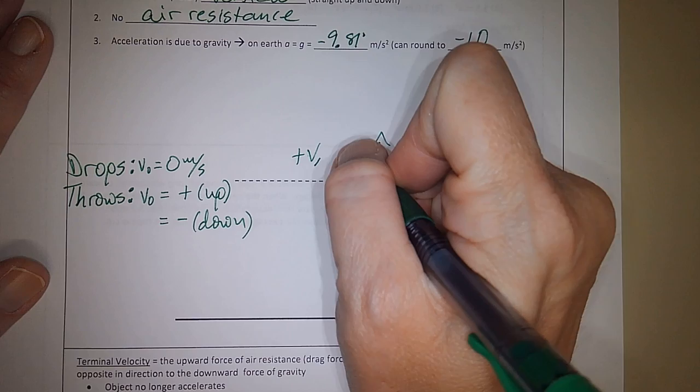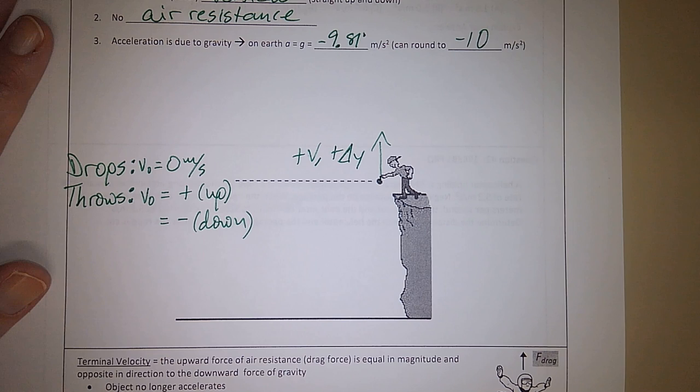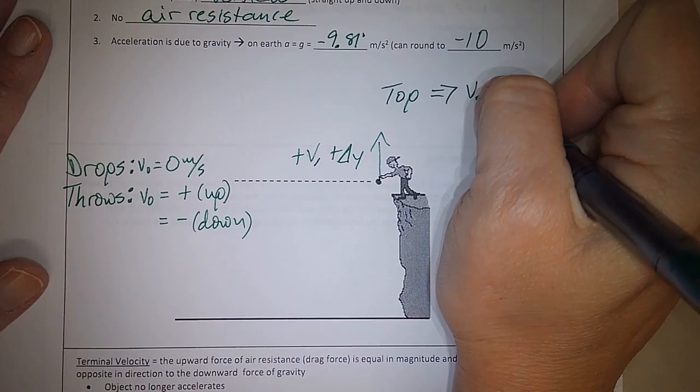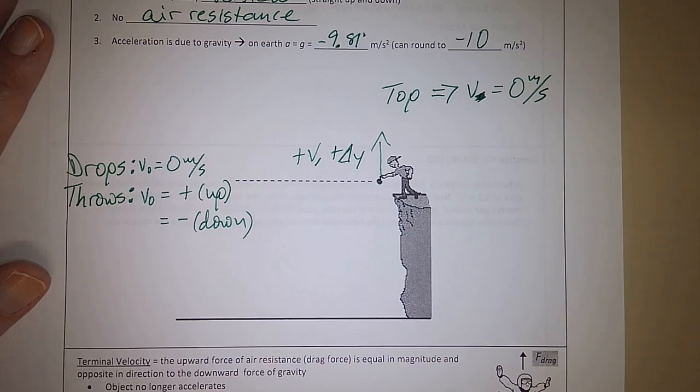At the top of any trajectory, when you throw something up, does it keep going up? No. What does it do? It comes back down. So it instantaneously stops moving and then changes direction and starts to come back down. So at the top of any trajectory, your V is 0 meters per second always.